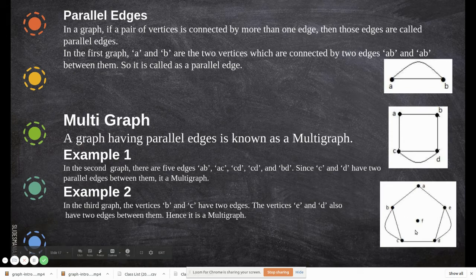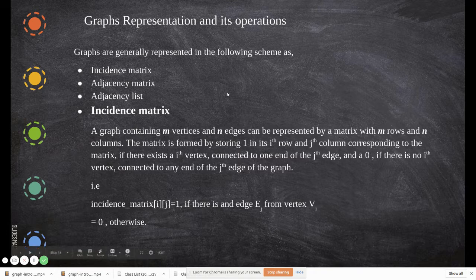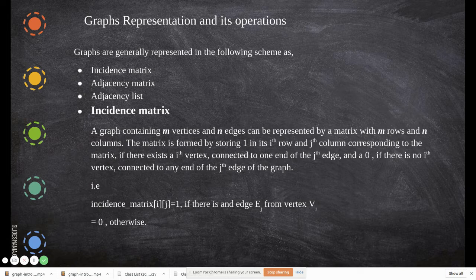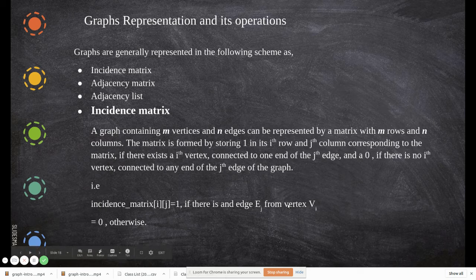Next we'll move to representation — how you can represent graphs when writing algorithms. How can you represent the data structure of a graph? We can represent a given graph in three ways: incidence matrix, adjacency matrix, and adjacency list. First, we'll see what an incidence matrix is.